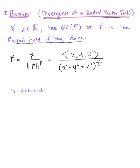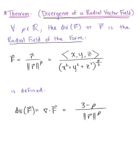So the divergence of this radial vector field is defined as follows. The divergence of vector F is equal to the dot product of del and the vector field, and this is going to be equal to 3 minus the constant p, all divided by the magnitude of vector r raised to the pth power. This is a nice shortcut that we can use when working with radial fields of this given form.